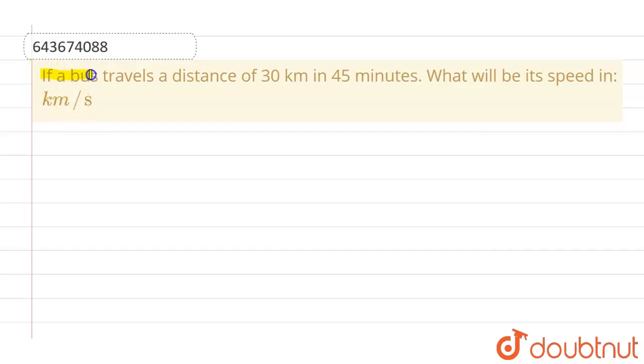this question - the given question is: if a bus travels a distance of 30 kilometers in 45 minutes, what will be its speed in kilometers per second? So the given distance is 30 kilometers.